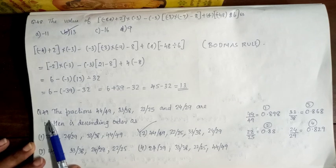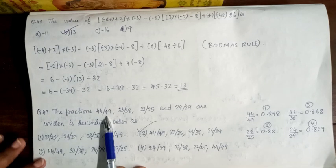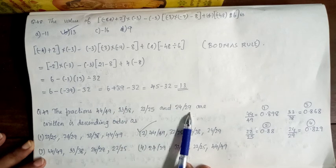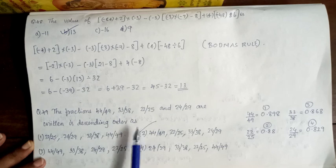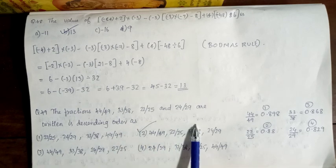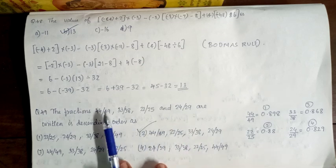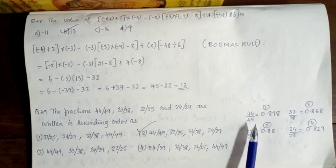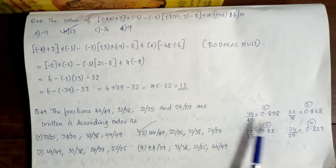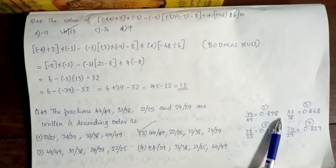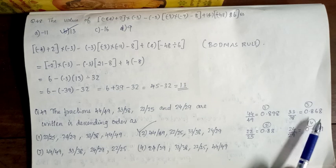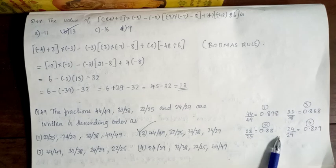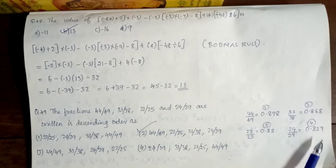Next question, 49. The fractions 44/49, 33/38, 22/25, and 24/29 are to be written in descending order. To compare, we convert to decimals: 44/49 is 0.898, 33/38 is 0.868, 22/25 is 0.88, and 24/29 is 0.829.